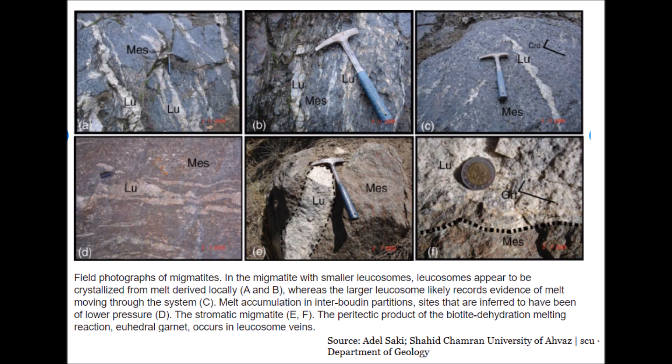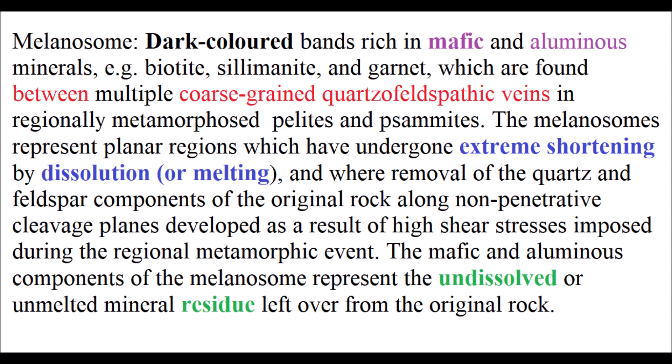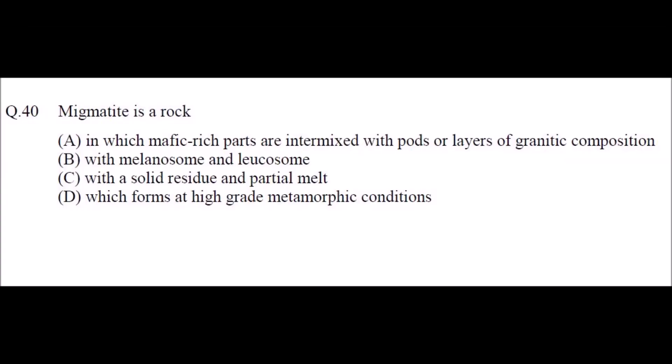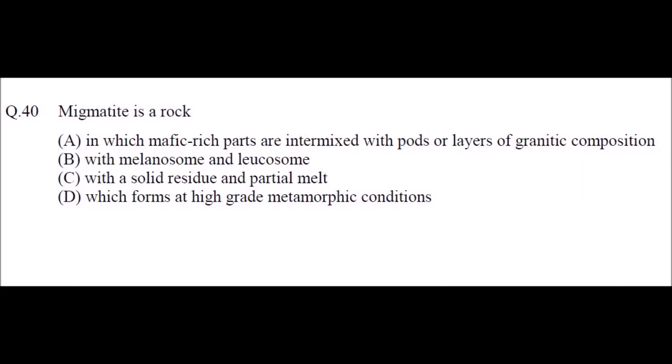In summary, in the zone of partial melting, liquid first forms as a dispersed phase along grain boundaries, driven by buoyancy, moving slowly by porous flow. Flow soon becomes channelized into small veins forming a drainage network. Compaction can extract basaltic liquid from peridotite beneath mid-ocean ridges, but shearing is needed for highly viscous granitic melts from lower continental crust. For the MSQ question, all four options — mafic-rich parts intermixed with granitic layers (A), melanosome and leucosome (B), solid residue and partial melt (C), and formation at high-grade metamorphic conditions (D) — are all correct.